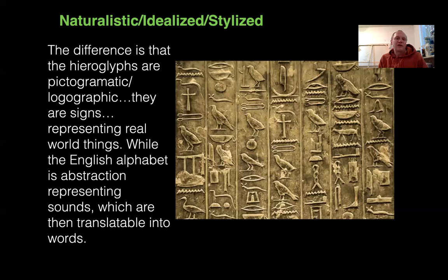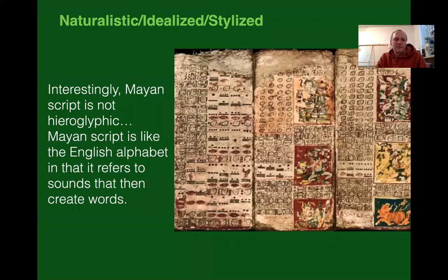Our alphabet is more parsed, more strung together, more dense. We could say hieroglyphics are chunks of words or straight-up depictions of actual things, where our alphabet is little pieces of sound. Mayan script, though, is a little closer to the alphabet — it refers directly to sounds that then create words.